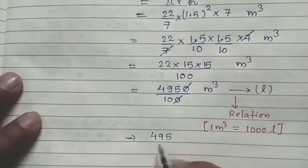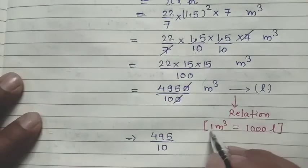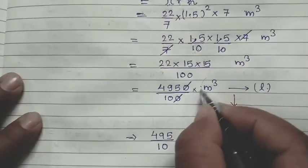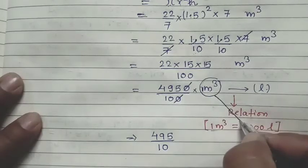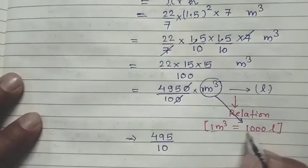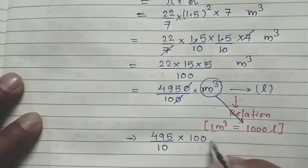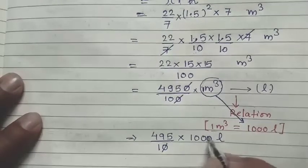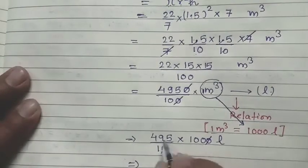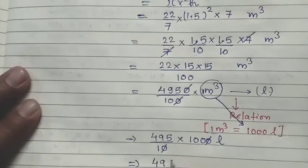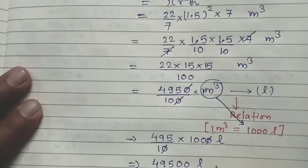Toh humara answer 495/10 hai aur meter cube ki jagah hum 1000 liter rakh denge. Into 1000 liters. Ek zero cancel ho gaya. Ab 495 × 100 multiply karo, toh aata hai 49500 liter. Yeh hai hamare paas answer liters mein.